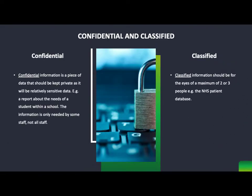Next one is confidential and classified information. If something is confidential, it's going to be kept private as it will be relatively sensitive data. Think of it as a school report of a specific need for students — if it's confidential, only specific staff need to know about it. For instance, if somebody learns in a specific way or has something specifically wrong with them, only that specific teacher needs to be aware of that, nobody else.